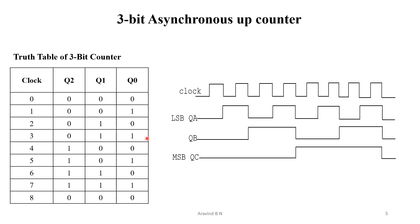The waveform for this up counter is shown here. At the falling edge of the clock, there is a change in the output. With respect to the waveform and truth table: QA, which is the LSB, matches Q0; QB matches Q1; and QC, the MSB, matches Q2. Wherever this waveform appears, QA↔Q0, QB↔Q1, and QC↔Q2.